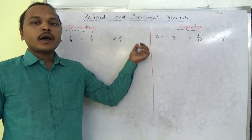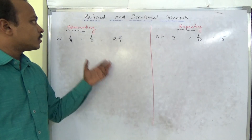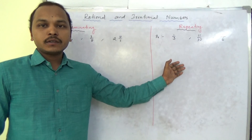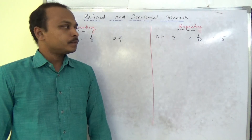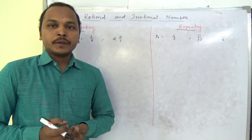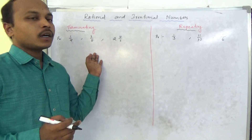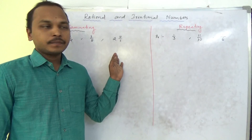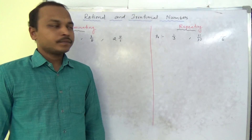In Rational and Irrational numbers, we will see the topic of terminating decimals and repeating decimals. What is terminating and what is repeating? The opposite word of terminating is non-terminating, and we also have repeating and non-repeating.